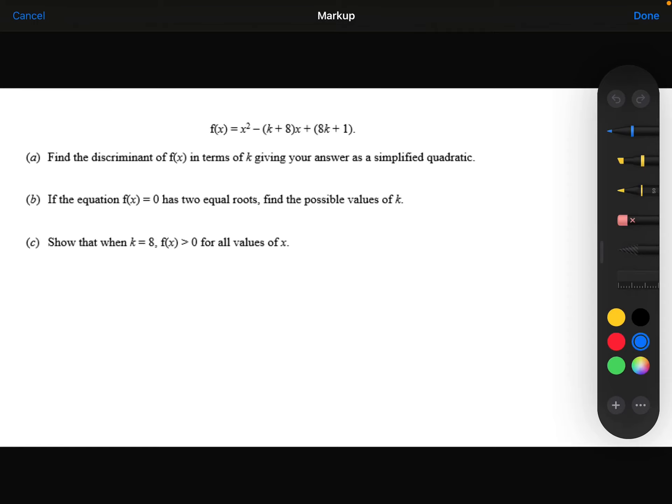F of x is equal to x squared minus (k+8)x plus (8k+1). Part A: find the discriminant of f(x) in terms of k, giving your answer as a simplified quadratic.